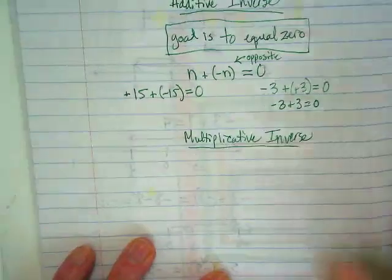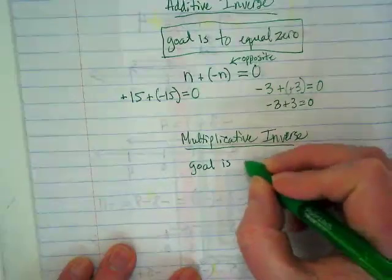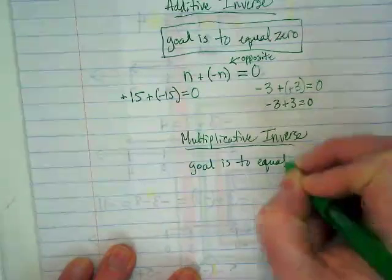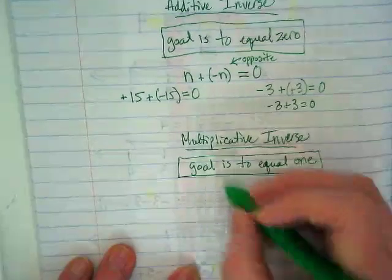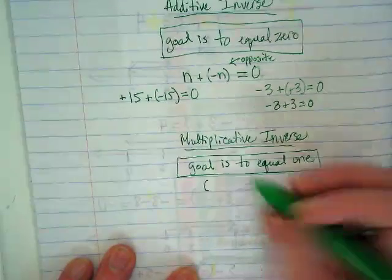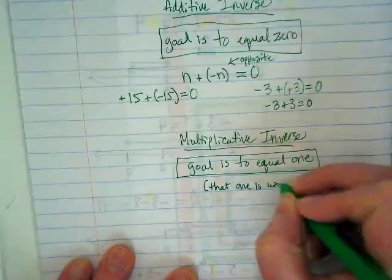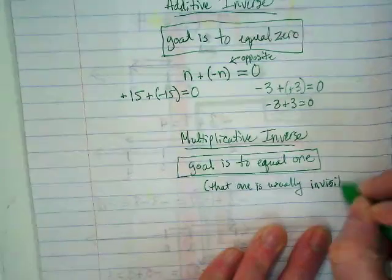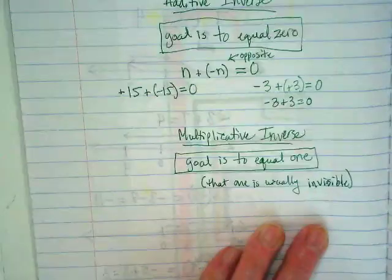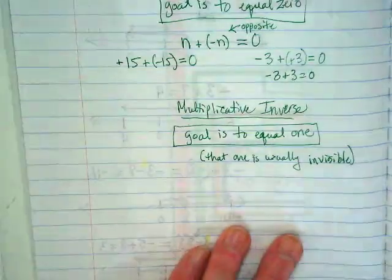Multiplicative inverse. That's when we have a goal. Our goal is to equal one. And just as a note, that one is usually invisible. I'll show you guys an example of what I mean about it being invisible in a minute. But first,